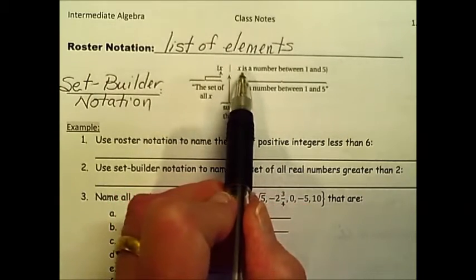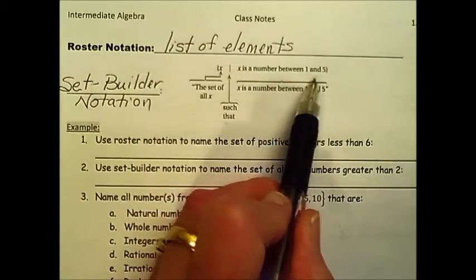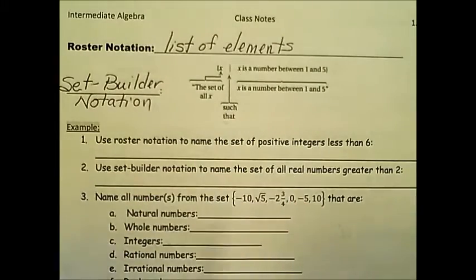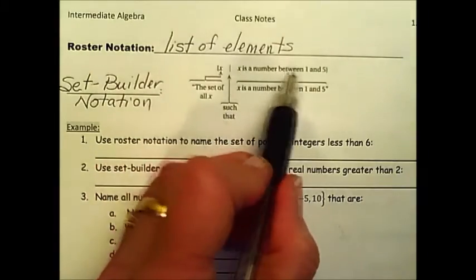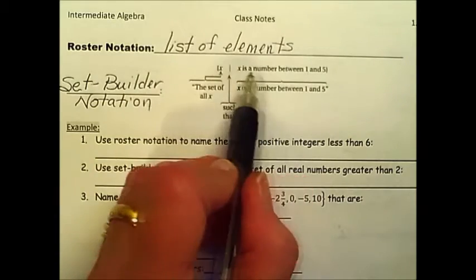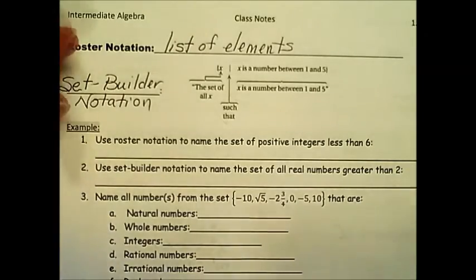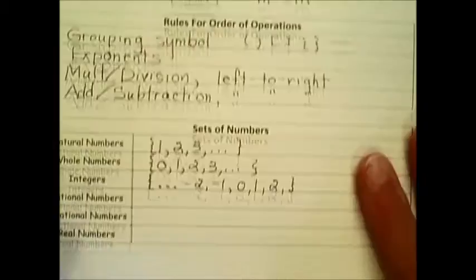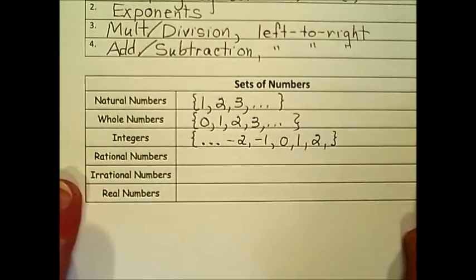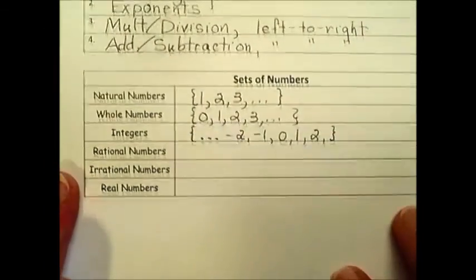X is a number between 1 and 5, and it can be whatever. It can be an inequality. It can be a written description like this. Either one of those is going to do the trick. And then, now that we have those two, I'm going to go back and finish off the rest of the list for sets of numbers here.